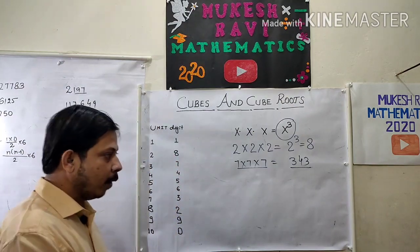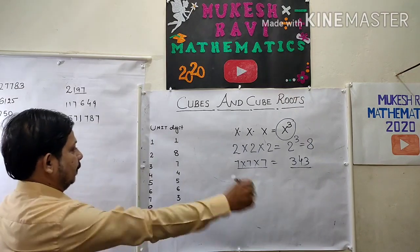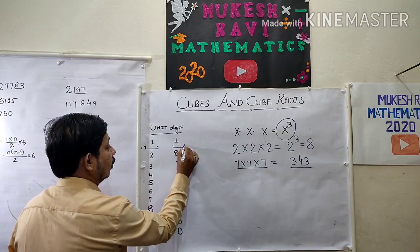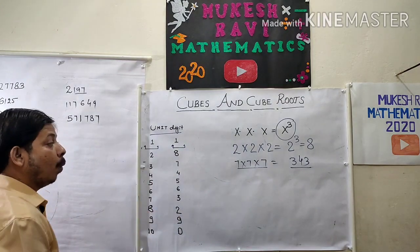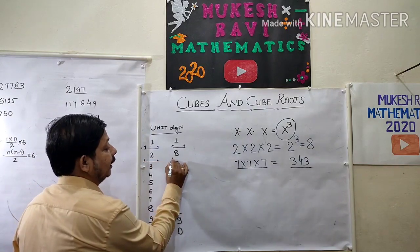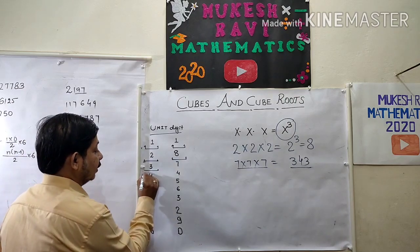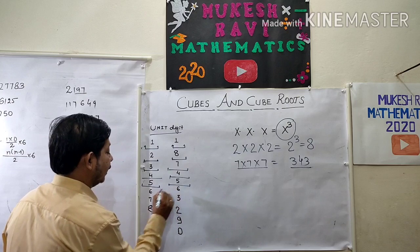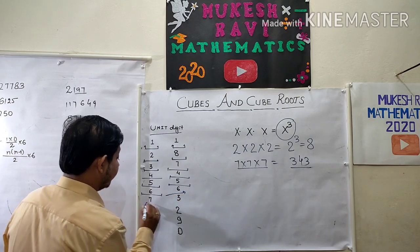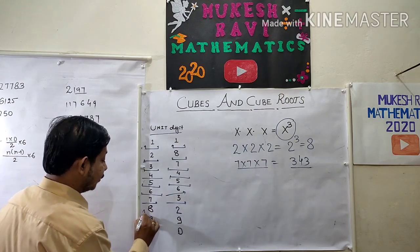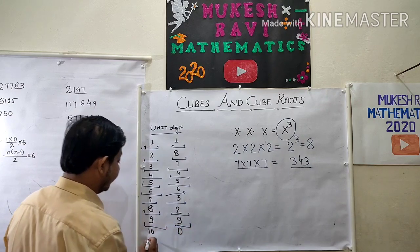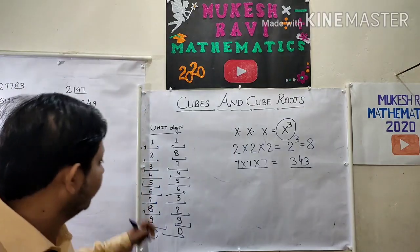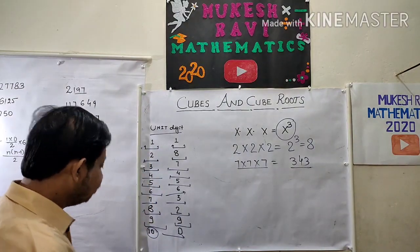Now some tricks about cubes: if a number ends with 1, the cube also ends with 1. If the unit digit is 2, the cube ends with 8. If unit digit is 3, cube ends with 7. If unit digit is 4, cube ends with 4. If unit digit is 5, cube ends with 5. If unit digit is 6, cube ends with 6. If unit digit is 7, cube ends with 3. If unit digit is 8, cube ends with 2. If unit digit is 9, cube ends with 9. If unit digit is 0, cube ends with 0. With this knowledge you will be able to find the cube very simply.